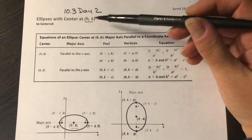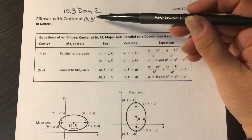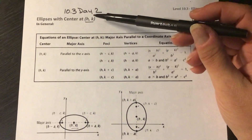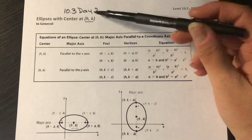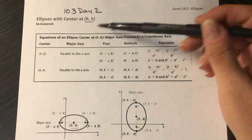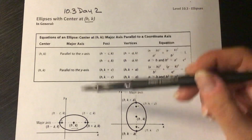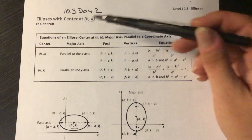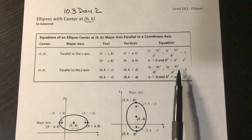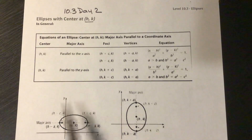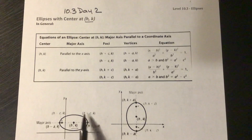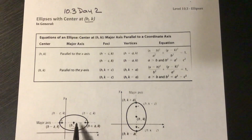Finishing up on section 10.3 with ellipses. This is day two. We're looking at ellipses today that don't have a center at the origin. We've transformed or shifted them to some point h, k that is on the inside of the ellipse. That would be our new center. The long ellipse has a major axis that is now parallel to the x-axis because we have a shift of h and k units.